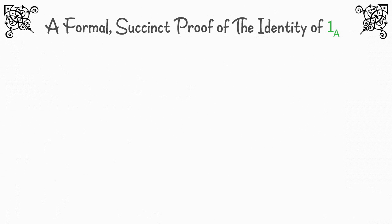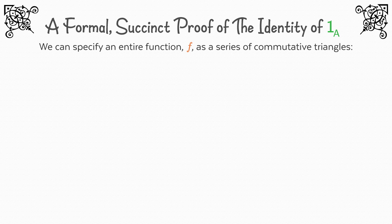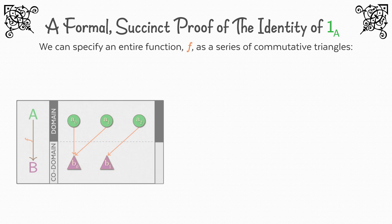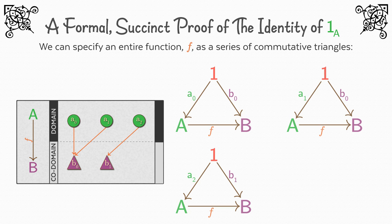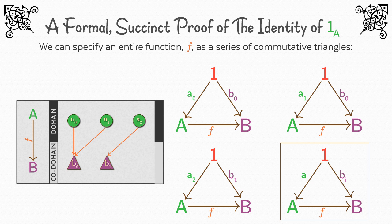And g of b is equal to g of f of a. We also can give a succinct formal proof that the identity arrow is indeed the arrow for which 1ₐ of a is equal to a. First note that we can specify an entire function as a series of commutative triangles. For example, the f illustrated is represented by these three triangles. Which means that we can say, in general, from an arbitrary a in A, there exists a unique triangle with exactly one b in B. We can actually use this for the definition of an S-map if we desire.